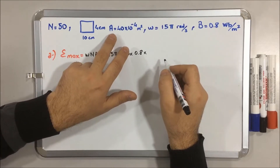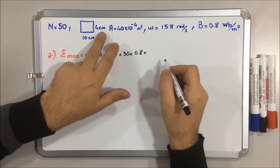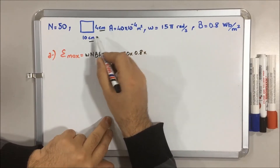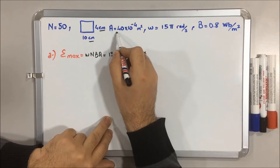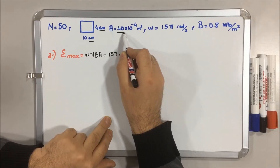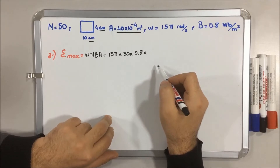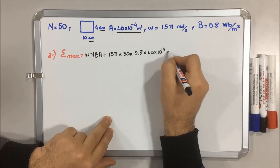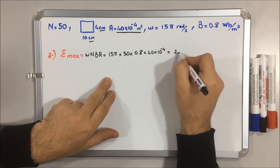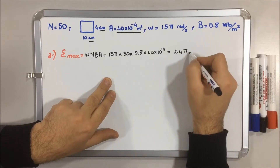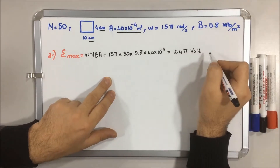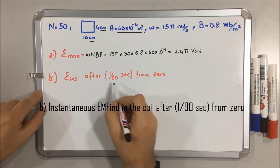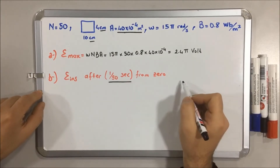I have to calculate the area, which will be length times width. But the unit is in cm, so I have to convert it to m². The area is going to be 40 cm², converted to m² by multiplying by 10 to the minus 4, so area is 40 times 10 to the minus 4. The result for Emax will be 2.4 pi volts.